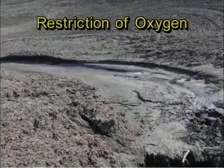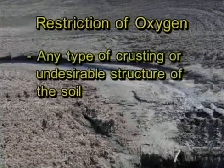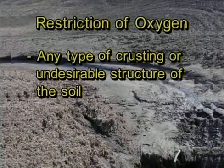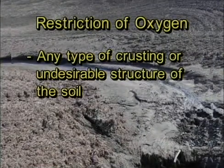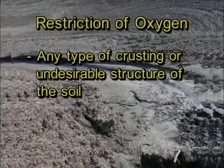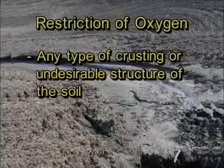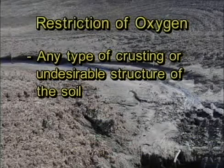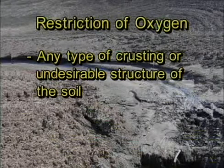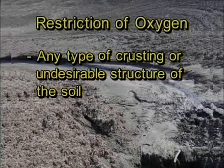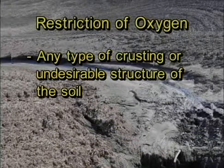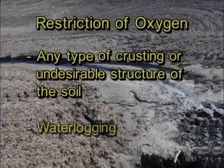What types of things could cause a restriction in this free exchange of oxygen? Well, one of the things certainly would be any type of crusting or undesirable type of structure at the surface of the soil — that would restrict or slow down this exchange of oxygen. The other thing that we oftentimes find restricting this exchange and causing reduced growth of plants is waterlogging.